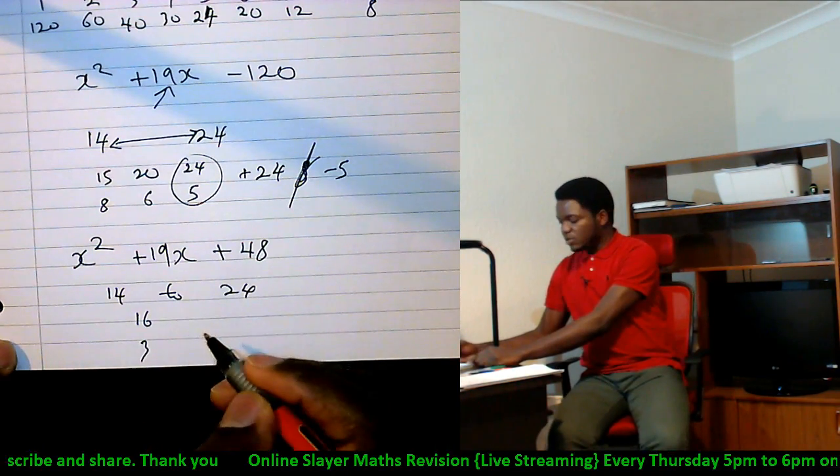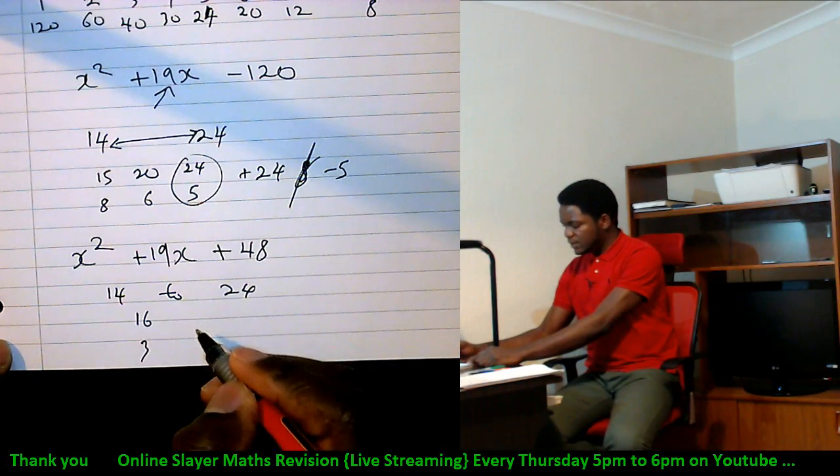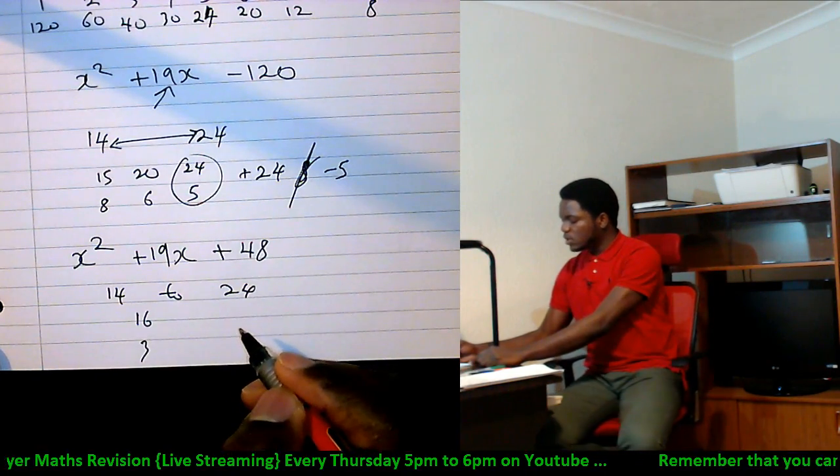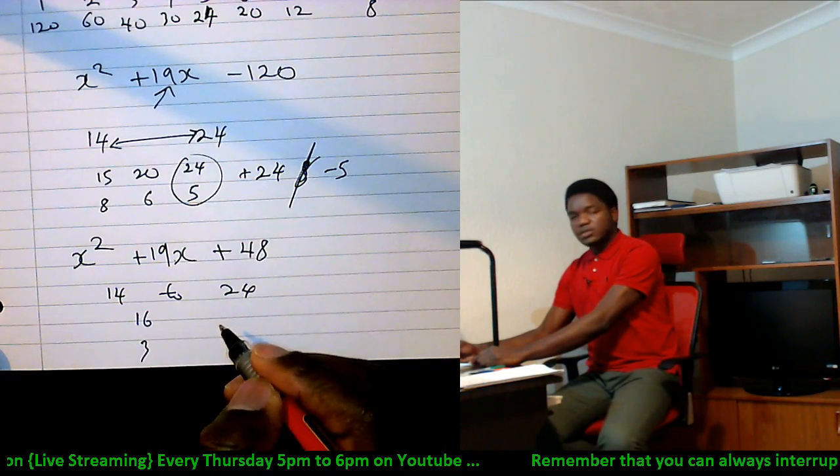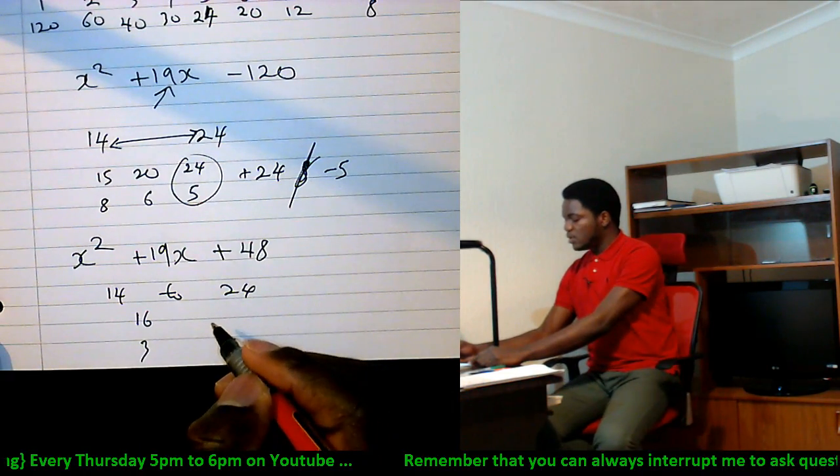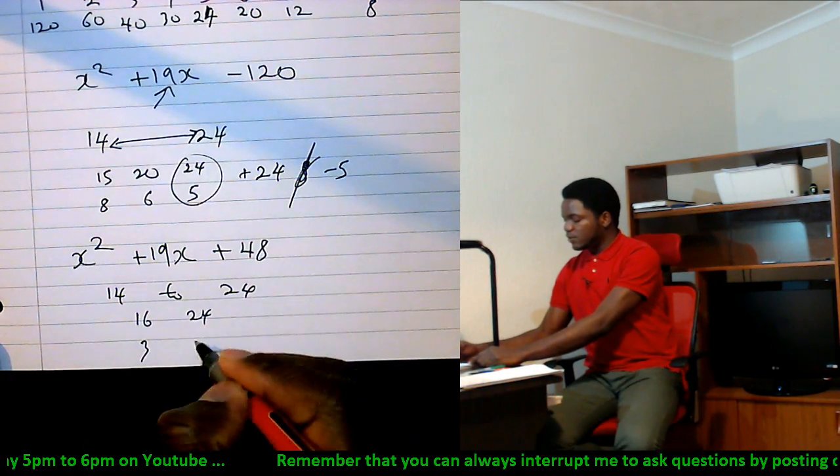17 is a factor? No. 18? No. 19? No. 20? No. 21? No. 22? No. 23? No. 24? Yeah, 24 times 2, right?